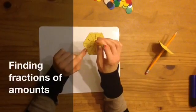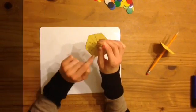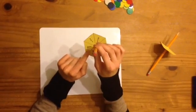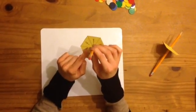My fraction spinner has a half, which you split an amount into two parts, and a quarter, which splits the amount into four parts. We know this because the denominator is four.